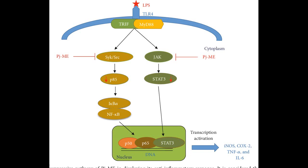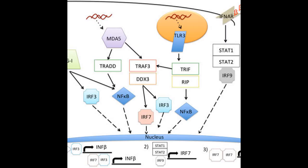NFκB and AP1 stimulate the expression of genes encoding many molecules required for inflammatory responses, including inflammatory cytokines such as TNF and IL-1, chemokines such as CCL2 and CXCL8, and endothelial adhesion molecules such as E-selectin. IRF3 and IRF7 promote production of type I interferons, IFN-α and IFN-β, which are important for antiviral innate immune responses.